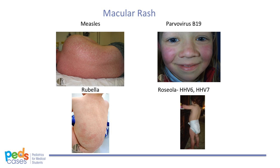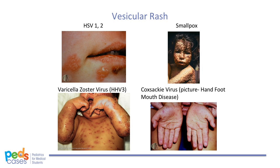Some viruses that cause red macular rashes are measles, rubella, parvovirus B19, and herpes virus 6 and 7. Viruses that can cause vesicular rashes include herpes simplex 1 and 2, varicella zoster virus, smallpox and monkeypox, and coxsackievirus.